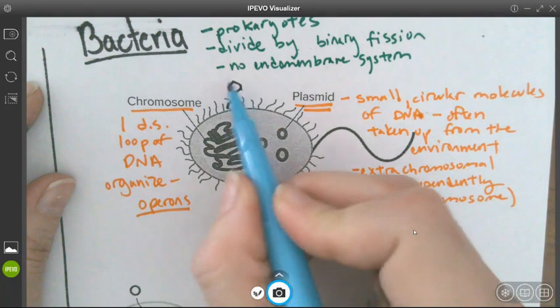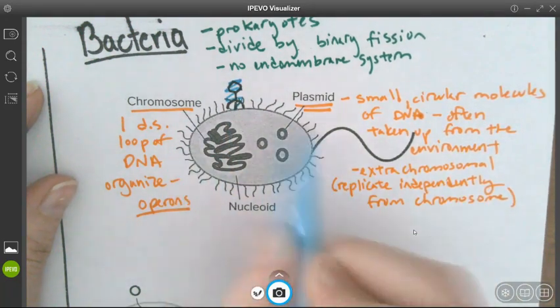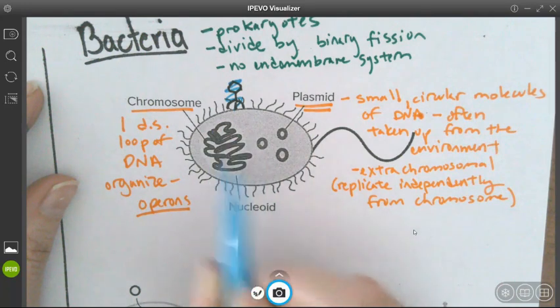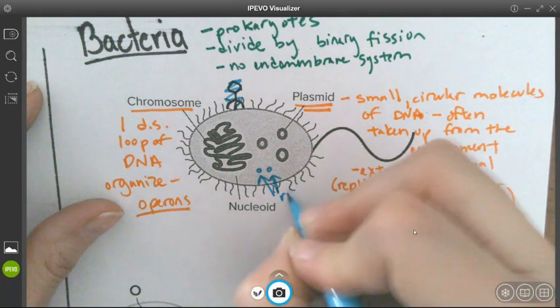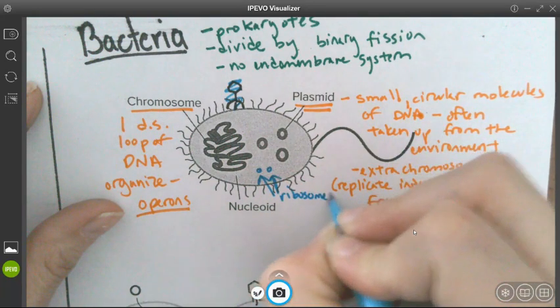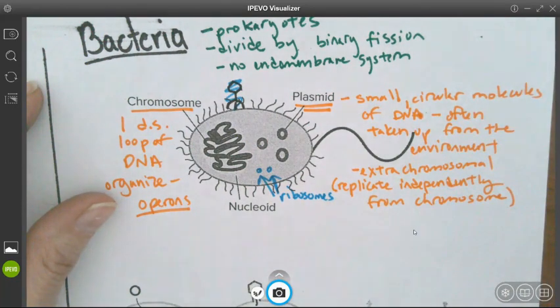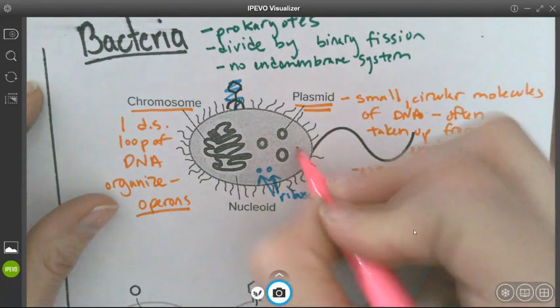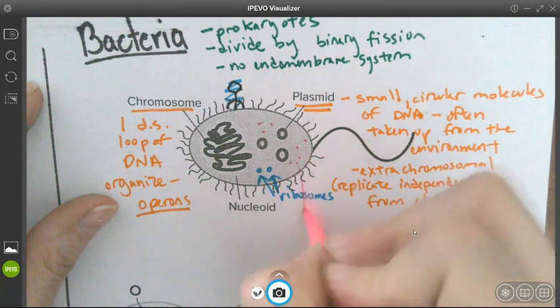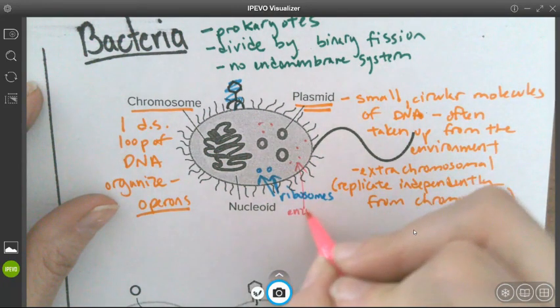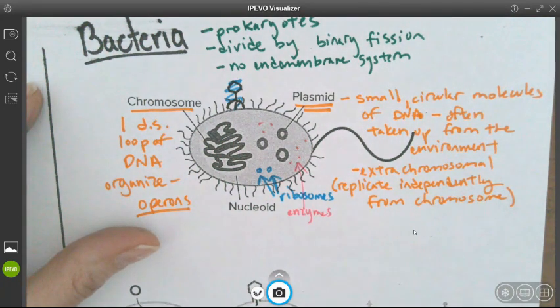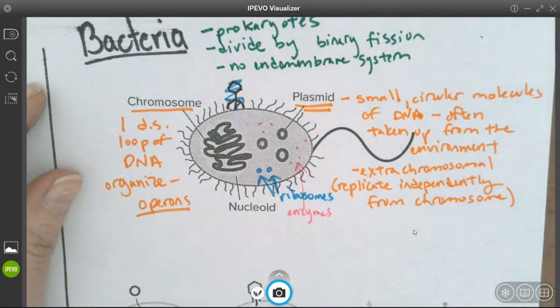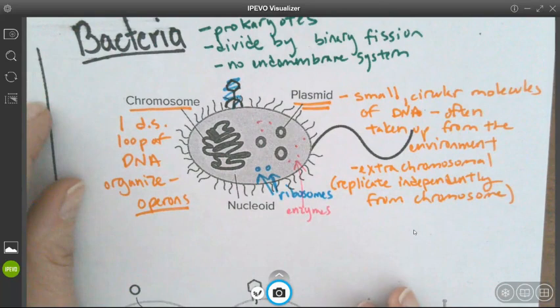So bacteria, by the way, this is the virus, right? I was just showing you viral size. Bacteria have a cell membrane. They have a region where their chromosome is found. They have plasmids. They also have ribosomes that do protein synthesis. And they have little enzymes. And those enzymes do cellular respiration, like parts of cellular respiration, like glycolysis, or perform a variety of chemical reactions to support anabolic or catabolic pathways.